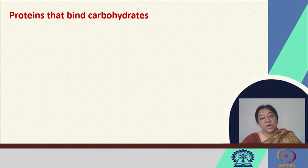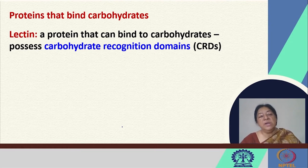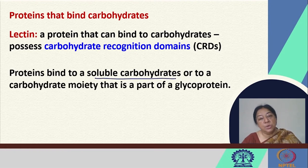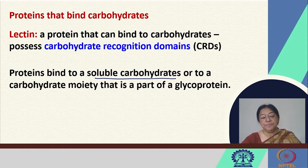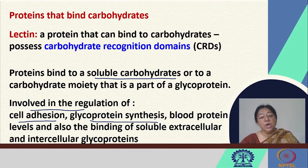Proteins that bind carbohydrates — lectins — were introduced in the previous lecture. A lectin is a protein that can bind to carbohydrates. In most cases carbohydrates are linked directly to protein molecules, but lectins can also bind to specific soluble carbohydrates individually or to a carbohydrate moiety that is part of a glycoprotein. This is involved in cell adhesion, glycoprotein synthesis, regulating blood protein levels, and the binding of soluble extracellular and intracellular glycoproteins.